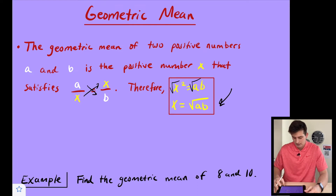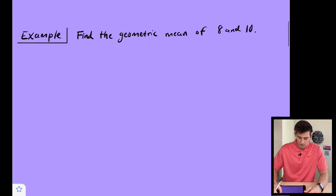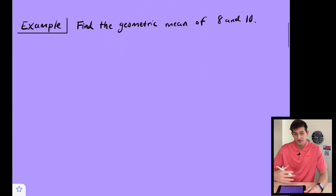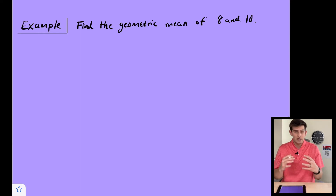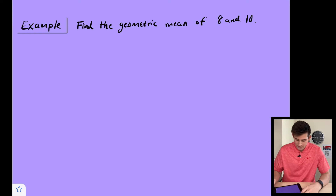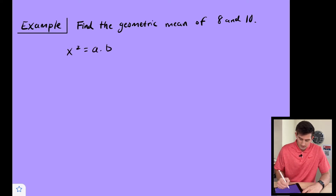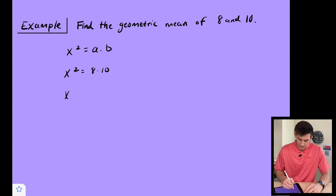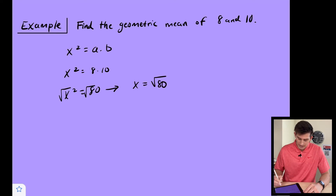Let's look at a couple examples. We'll start with an example where we just find the geometric mean, then apply geometric mean to some right triangles. So we can say X squared is equal to A times B, and our two numbers are 8 and 10. So X squared equals 80, and we take the square root of both sides to get X equals the square root of 80.